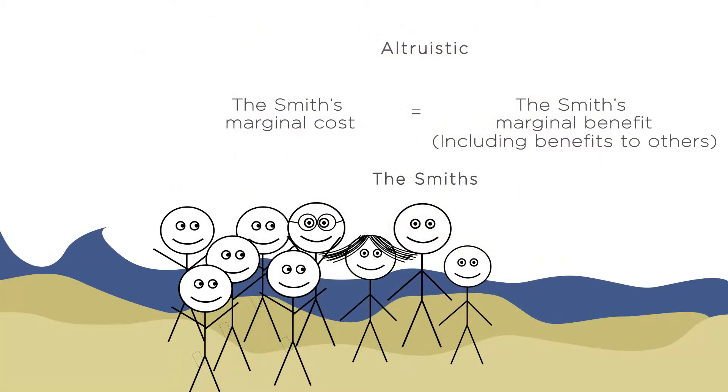That is, if the Smiths consider my benefits part of their benefits, then their private marginal benefits are the social marginal benefits. Now, this seems unlikely, but there is lots of evidence that altruism does exist to some extent.